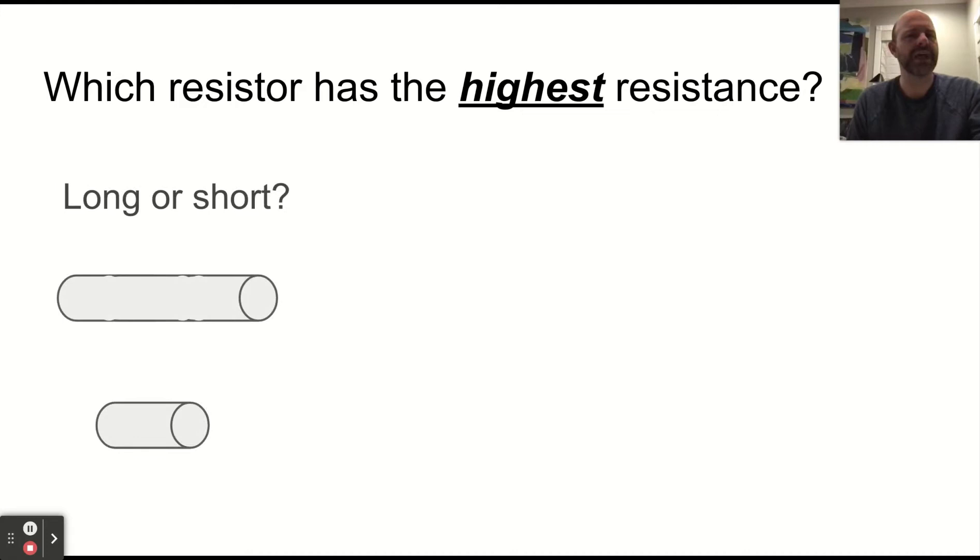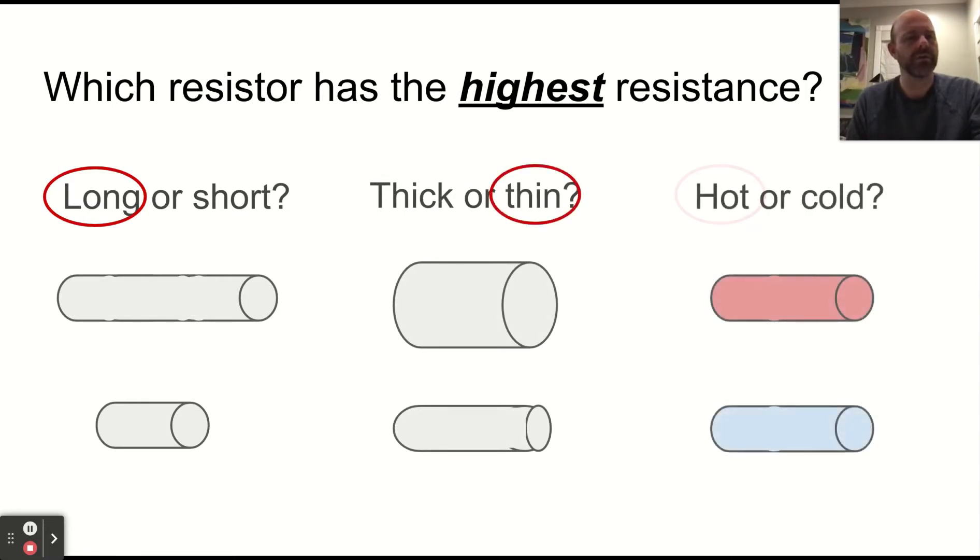So which resistor has the highest resistance? The long one or the short one? Could be the long. The thicker, the thin? The thin. And the hotter, the cold? The hot. So hot, thin, long wires have high resistance.